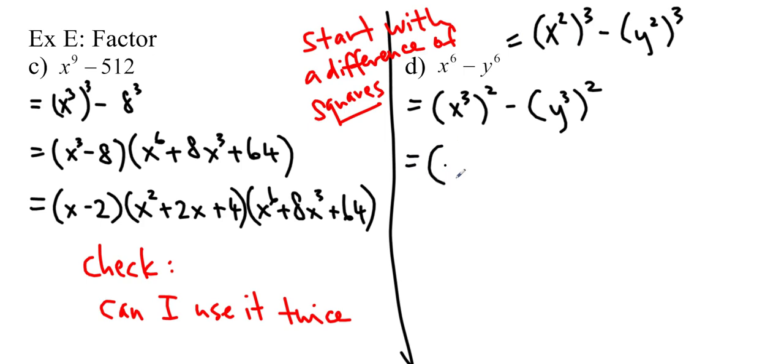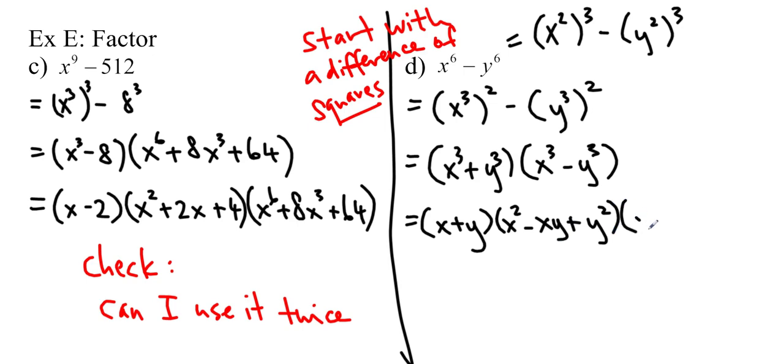Ends up being x cubed plus y cubed times x cubed minus y cubed. And, of course, these are both factorable. We get x plus y times x squared minus xy plus y squared times x minus y times x squared plus xy plus y squared.